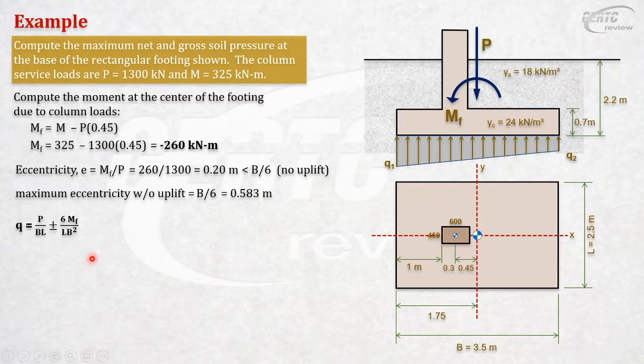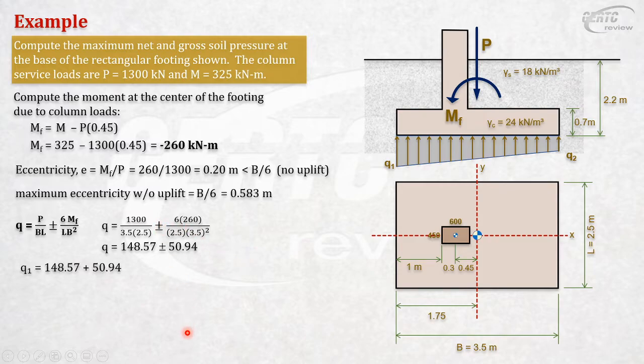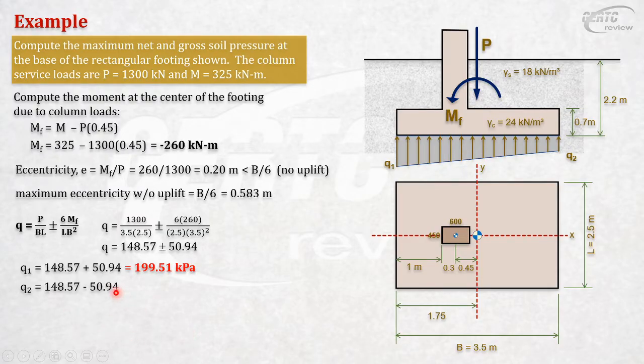Let's substitute the values. Forget about the sign for now - the sign just indicates direction. Since we adopted clockwise positive, the net moment is counterclockwise, so don't carry the negative sign. P = 1300, dimension 2.6M... 6M over LB squared. Solving each term: 14.57 and 50. Obviously q1 is larger. To get maximum, use the plus sign for maximum net soil pressure. For minimum, use minus.